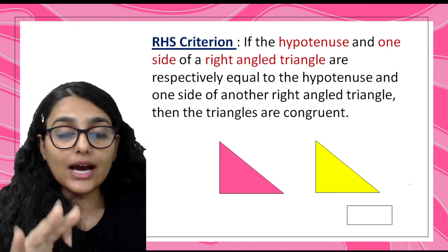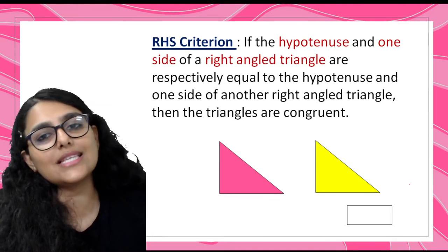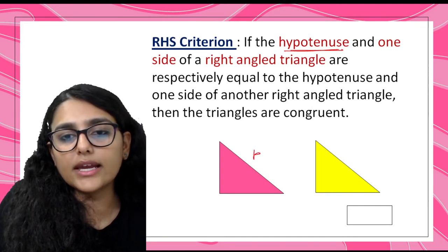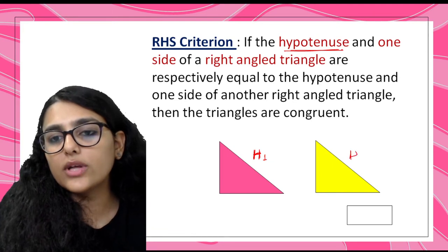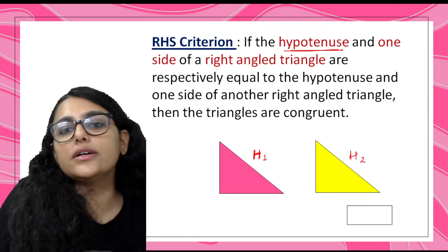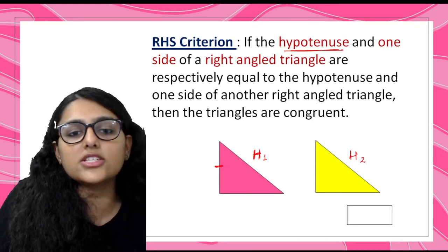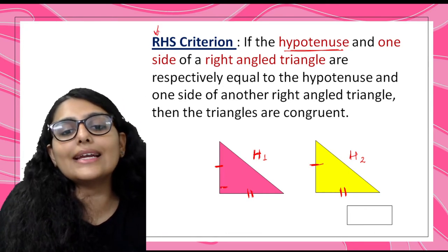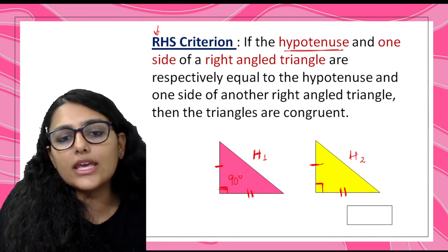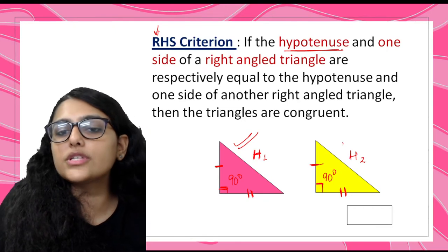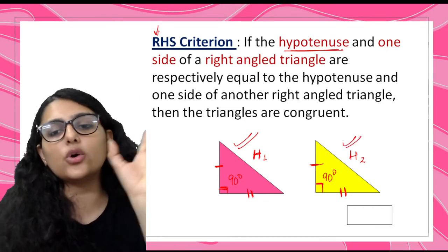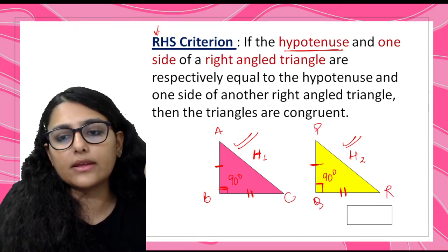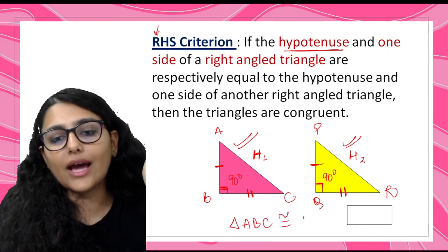The last major criterion is RHS - right angle, hypotenuse, and side. If the hypotenuse and one side of a right triangle are respectively equal to the hypotenuse and one side of another right triangle, the triangles are congruent. Since both are right-angle triangles, one angle is already 90 degrees. With the hypotenuse equal and one other side equal, we have three matching parts, so triangle ABC is congruent to triangle PQR by RHS.